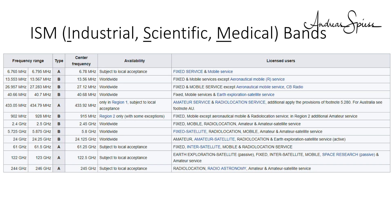Once licensed, you can use amateur frequencies with very high power, up to 1500 watts, and you are allowed to build your own device. All others have to use approved, usually FCC-approved, equipment. An even smaller part of the spectrum is reserved for unlicensed usage. These bands are called ISM bands. Relevant for makers are the 433 MHz, the 868 or 915 MHz, and the 2.4 GHz bands. The power limits are very low — usually only 100 mW to 1 W — and sometimes the time you are allowed to transmit is also limited, to reduce interference between the many users.